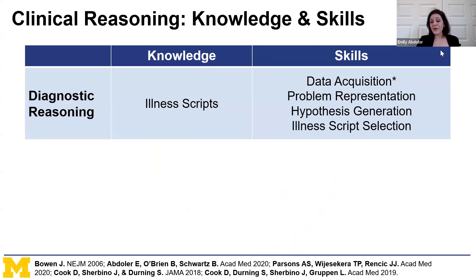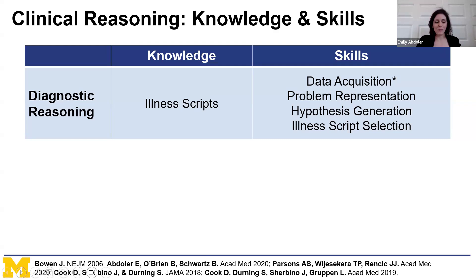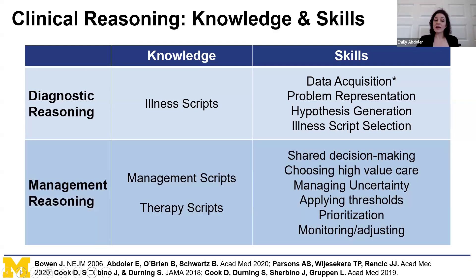Diagnostic reasoning is fairly well defined in the literature over the last 30 to 35 years. Knowledge is organized in illness scripts, and the skills—data acquisition, problem representation, hypothesis generation, and illness script selection—are well accepted. For management reasoning, we're still sorting it out. We think knowledge is in the form of management or therapy scripts, and skills being delineated include high value care, shared decision-making, managing uncertainty, applying thresholds, prioritization, and monitoring and adjusting—though probably many more skills exist.